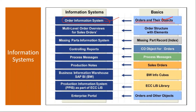Along with that, you have a multi-level order overview for sales orders. This is relevant during make-to-order (MTO) scenarios where a sales order is created, and from that sales order the production gets triggered. To track all those downstream activities, they use this multi-level sales order report. You also have a missing parts information system — if you have multiple production orders and want to check what missing parts or components are available for that pool of orders.